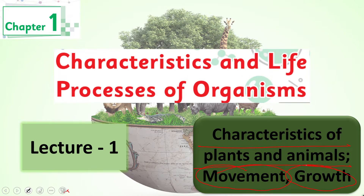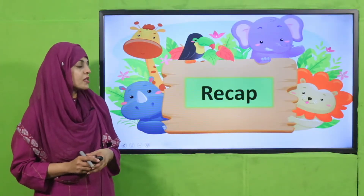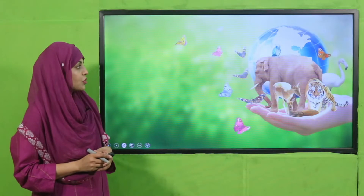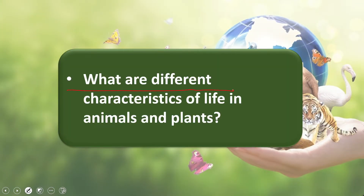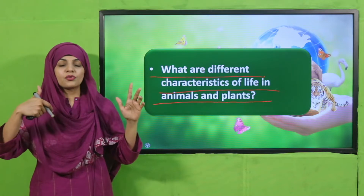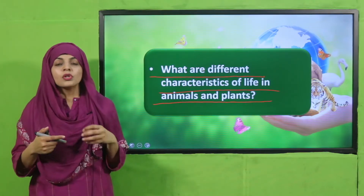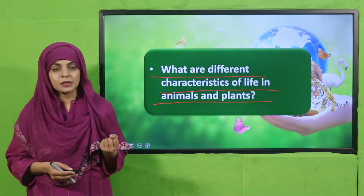My dear students, we are learning about different characteristics of plants and animals. Let's quickly move to the recap. Listen to the question and then answer: What are the different characteristics of life in animals and plants? Movement, growth, reproduction, respiration, excretion, sense and respond — these are all different characteristics of both plants and animals.